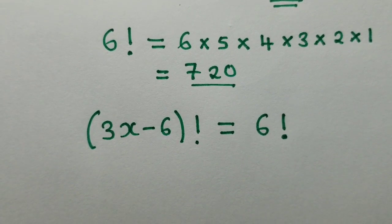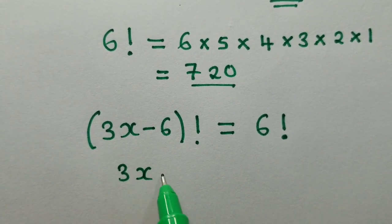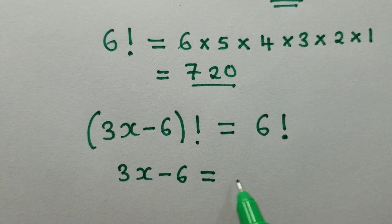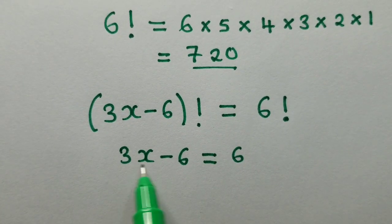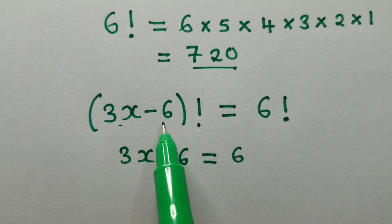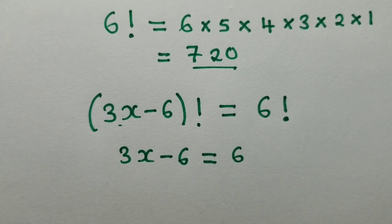So our idea is to make sure that we've got a factorial here and a factorial here. This simply means 3x - 6 is equal to 6.